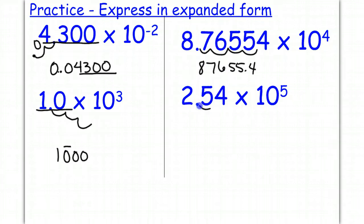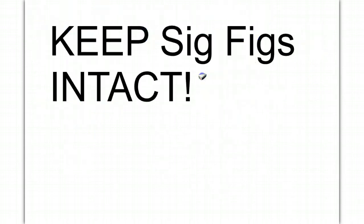Finally, 5 spaces to the right, 1, 2, 3, 4, 5. We fill in with zeros, so 1, 2, 3, 4, 5, and 3 sig figs to begin with, 3 sig figs to end with. All of these are significant, and they are all still present afterwards. Always keep your sig figs intact.